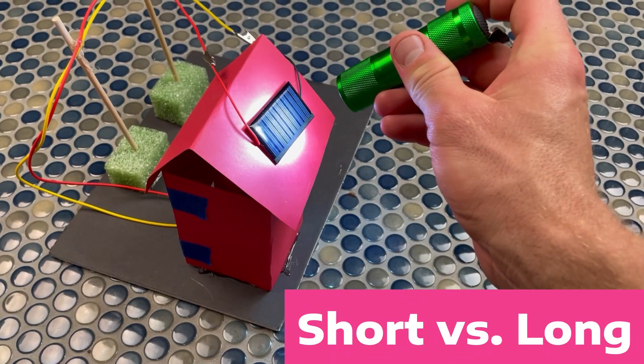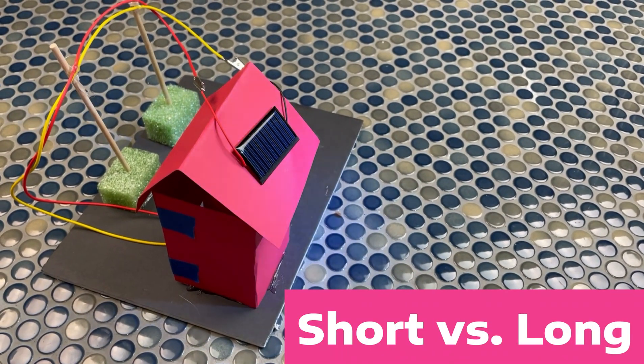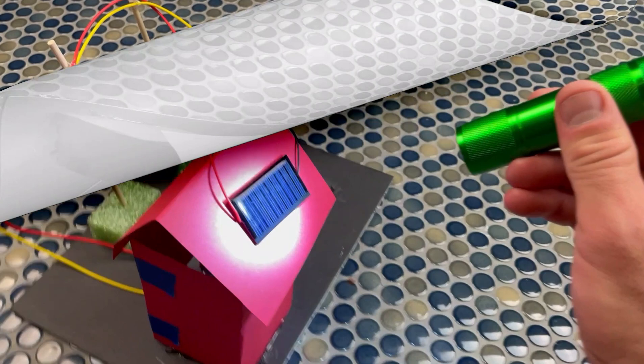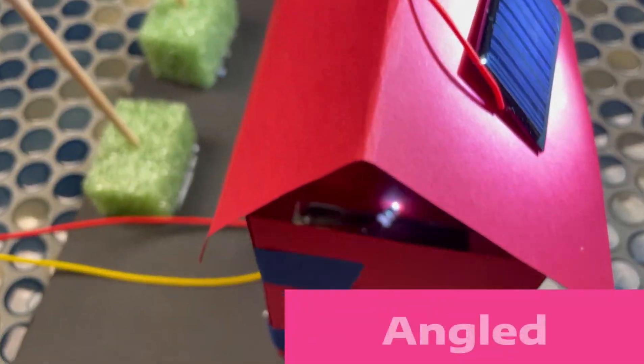The short versus the long portion of this is asking us to put the flashlight up nice and close to the solar panel, and then backing it away, and noticing the difference between the two scenarios.